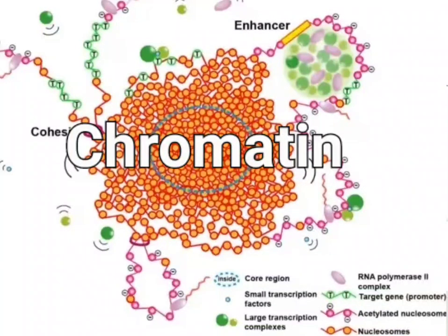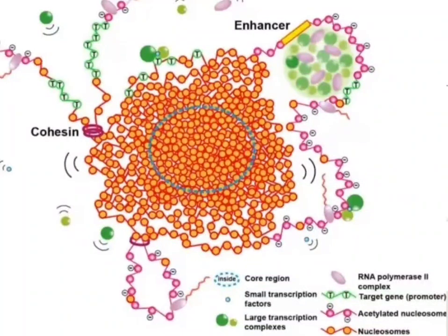Chromatin describes the combination of DNA and proteins in the cells of humans and other eukaryotes. According to typical textbook models, chromatin occurs in two forms: euchromatin that is less condensed and can be transcribed, and heterochromatin that is more condensed and usually not transcribed.